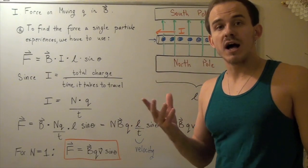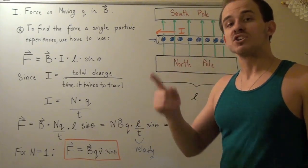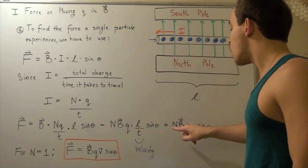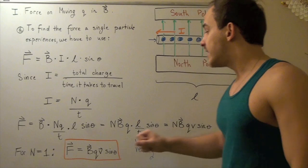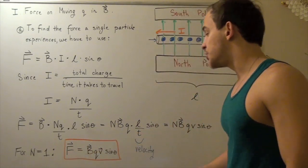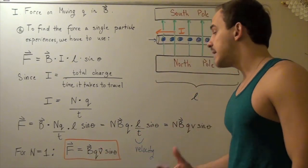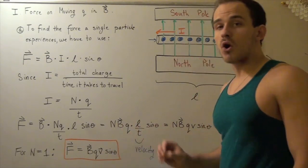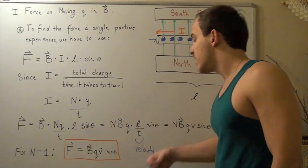And I want to find, for one particle, what is the force a single particle feels in a magnetic field. And so, I replace N with 1, and I get my force is equal to magnetic field times the charge of that particle times the velocity of that particle times sine theta.